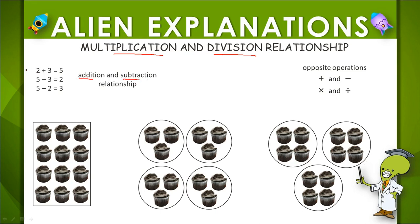When we know that 2 plus 3 equals 5, we also know that 5 minus 3 equals 2, and 5 minus 2 equals 3. That's because addition and subtraction are opposite operations, or sometimes called inverse operations.